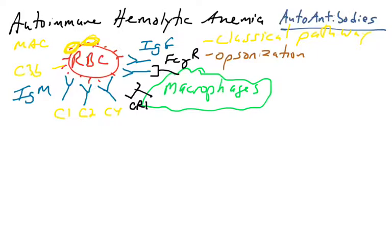So when antibodies, like IgG and IgM, bind the surface of red blood cells, that can trigger the classical pathway of complement, as well as opsonization via the complement pathway, or just antibody-mediated opsonization.